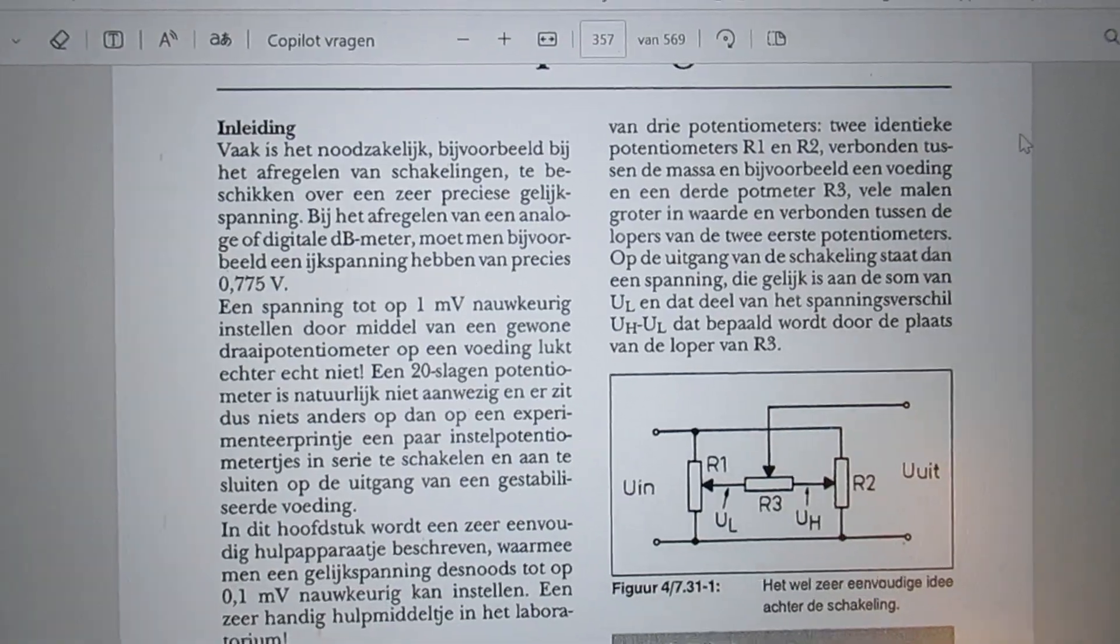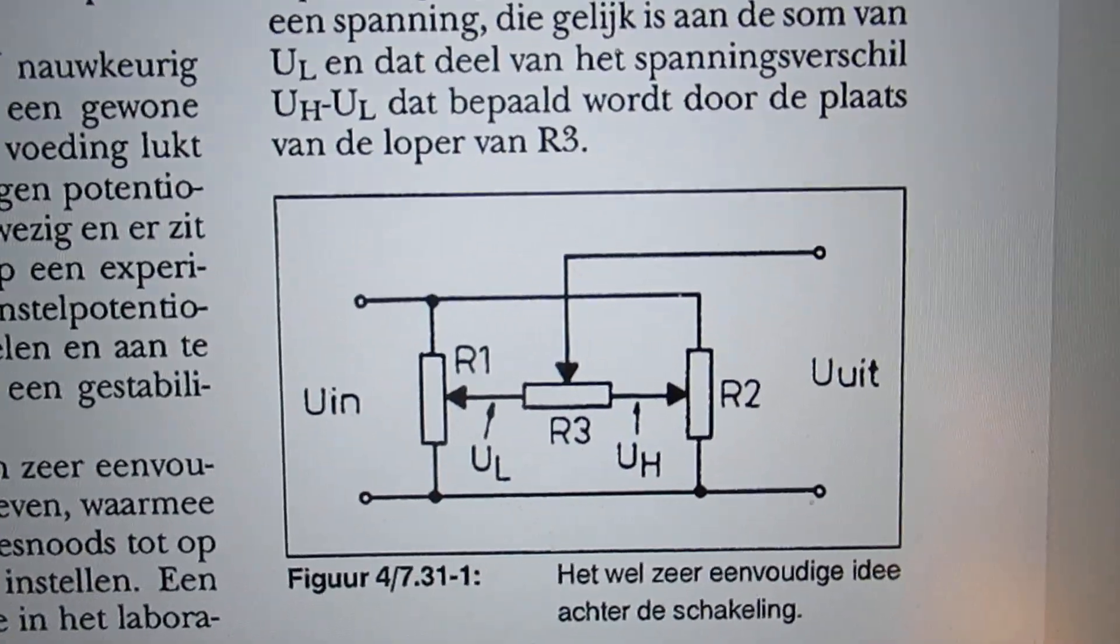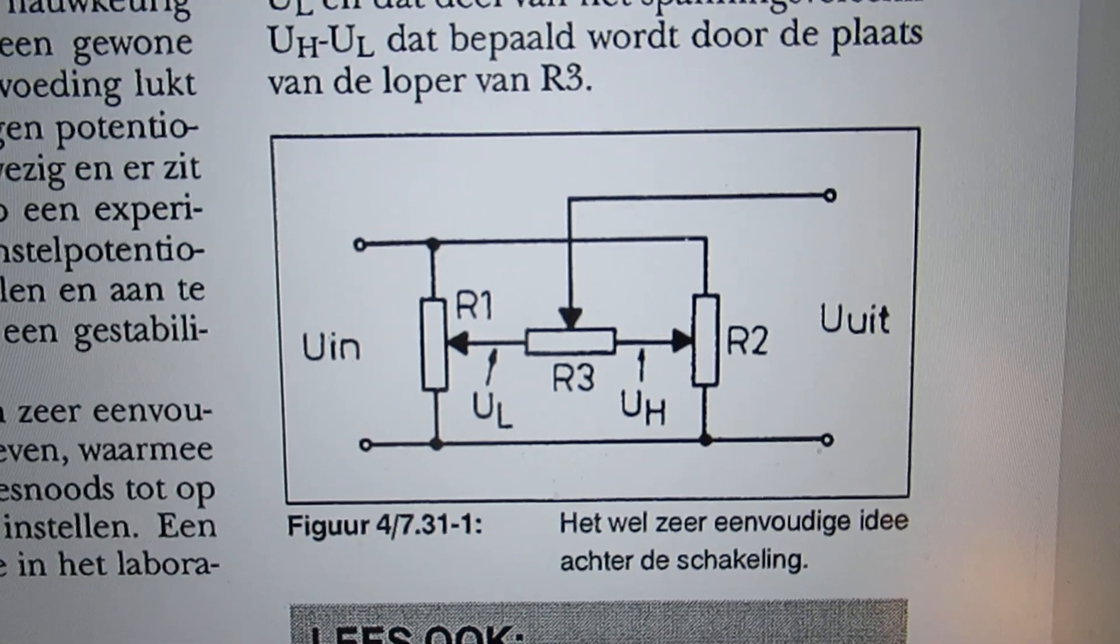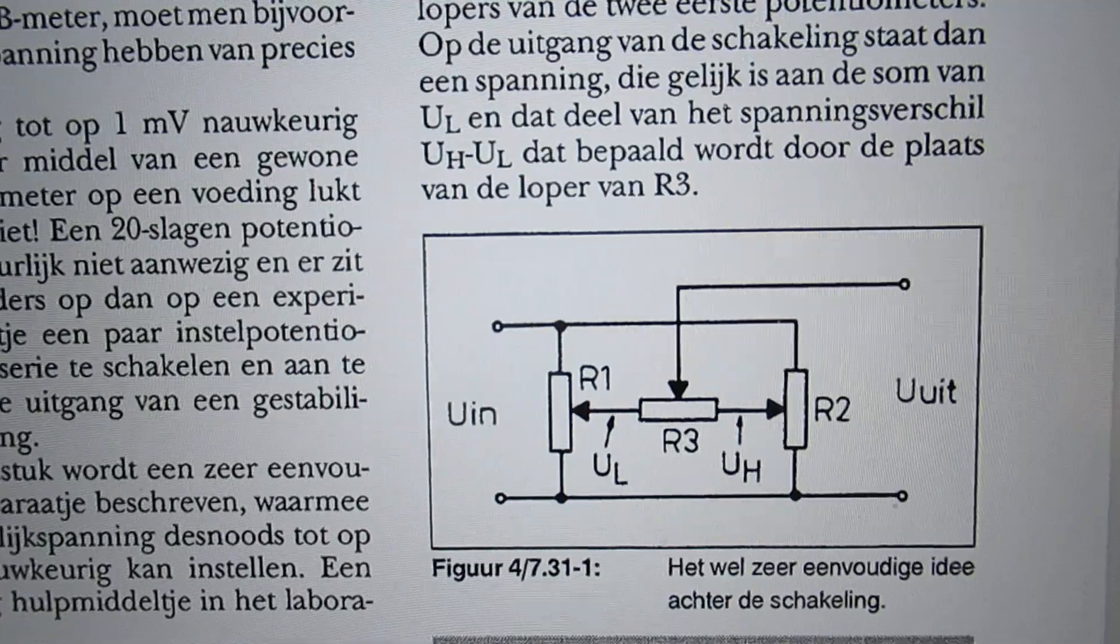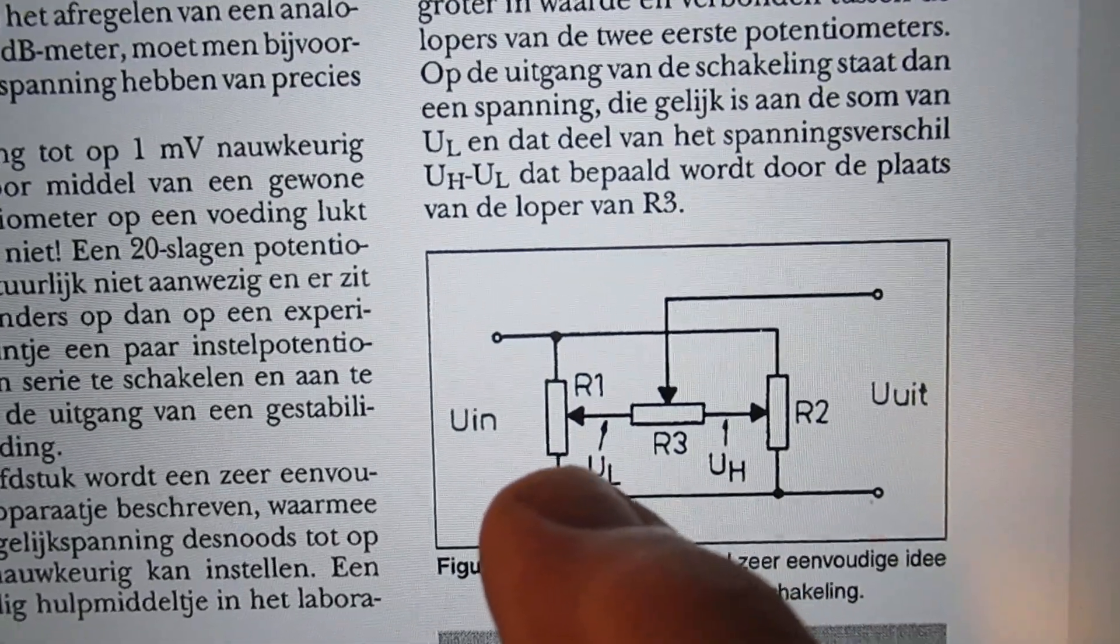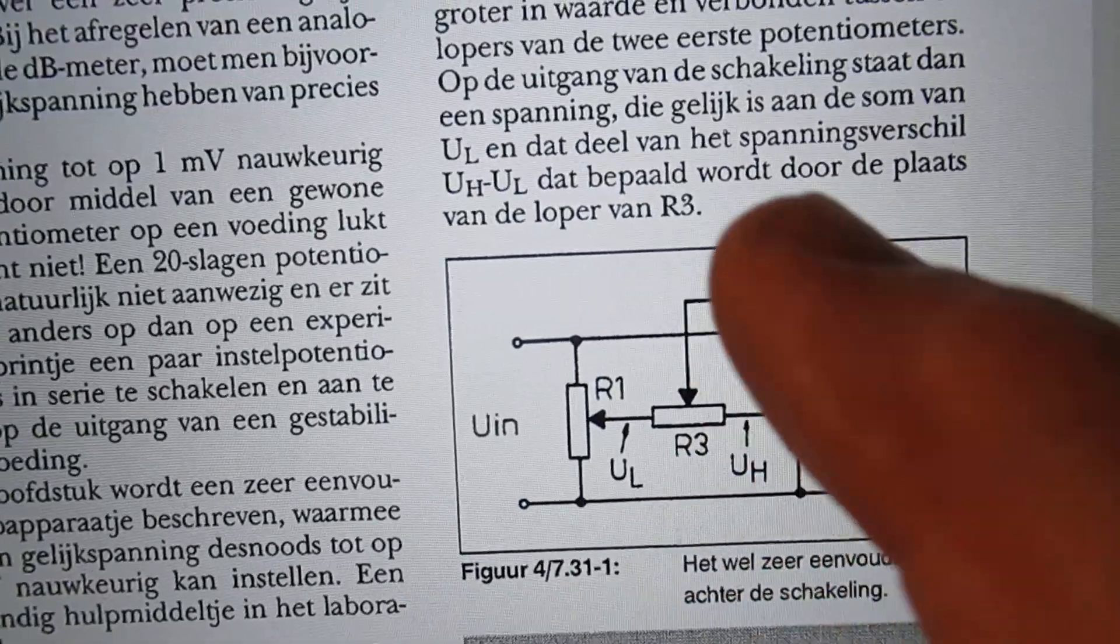The text is of course Dutch, but when you know a little bit about electronics, you can surely understand it. There are two potential meters here, voltage in, voltage out, and there is between these two potentiometers, between the wipers, another potentiometer.